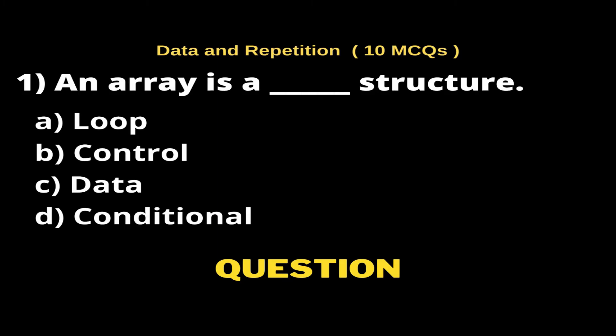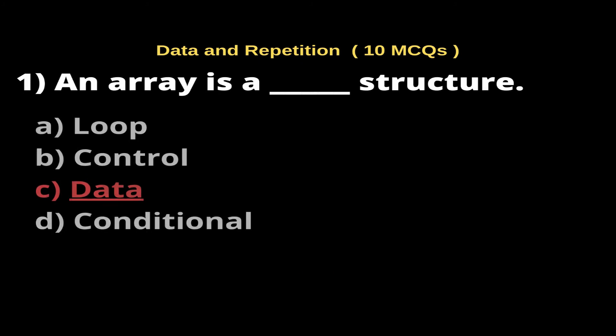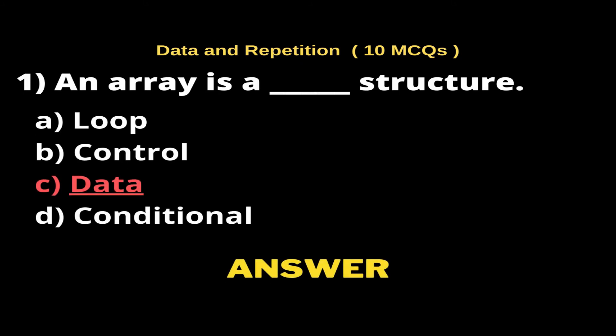Question 1: An array is a ___ structure. Options: A) Loop, B) Control, C) Data, D) Conditional. The right answer is Option C, Data.